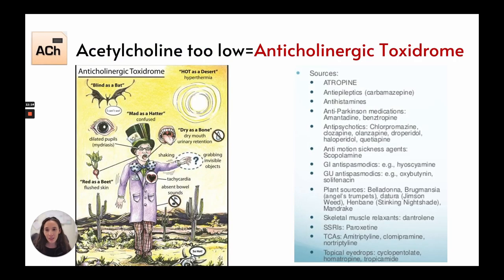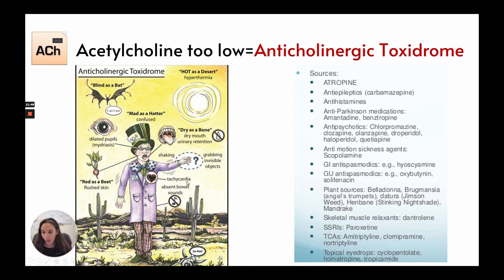When acetylcholine is too low, we can have anticholinergic toxidrome syndrome. Signs and symptoms include hyperthermia, blind as a bat with dilated pupils, confusion, dry mouth, urine retention, shaking, grabbing at invisible objects, tachycardia, absent bowel sounds, very flushed skin, and feeling very hot.